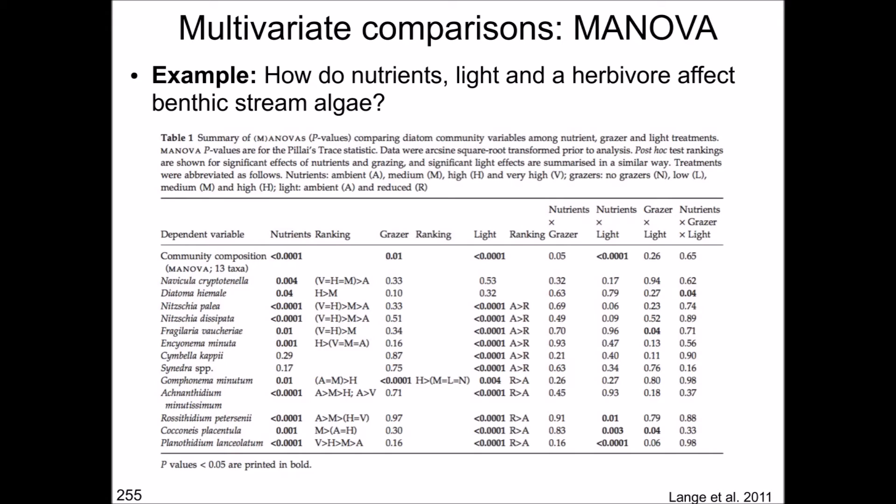An example where MANOVA has been used: a study where diatom communities in artificial stream channels were exposed to nutrients, different light treatments, and grazers. A MANOVA was done for the whole community for 13 taxa, testing different levels of nutrients, grazers, and light. With that, you could identify for the whole community whether there is an overall effect of the nutrients and other treatments.